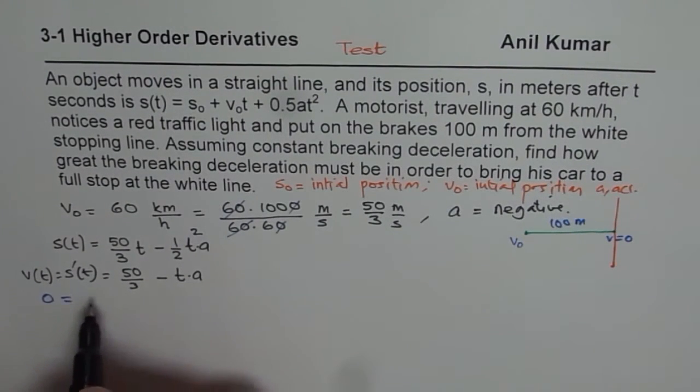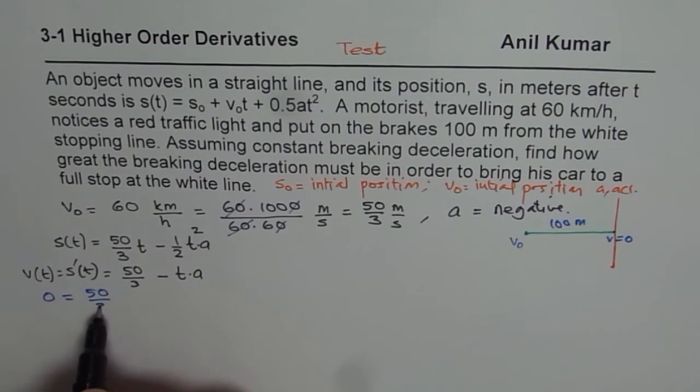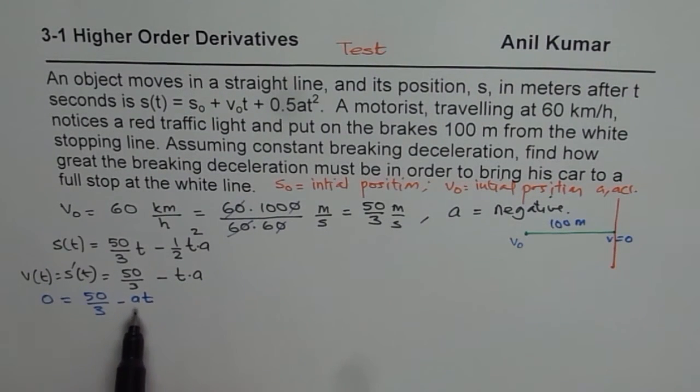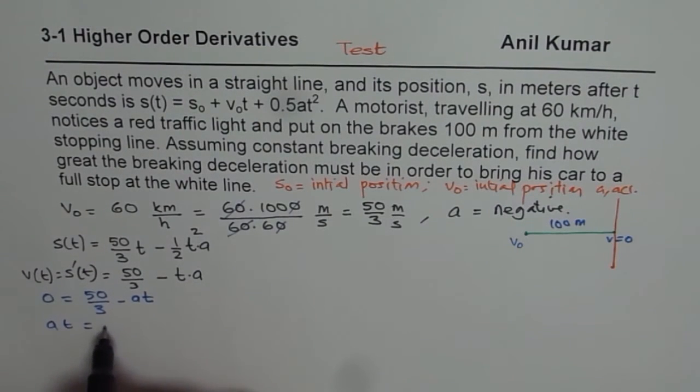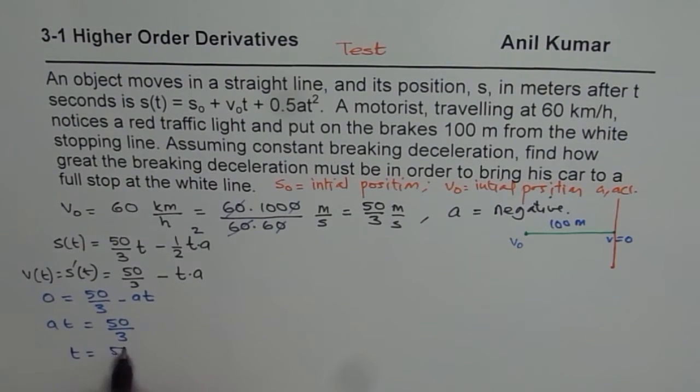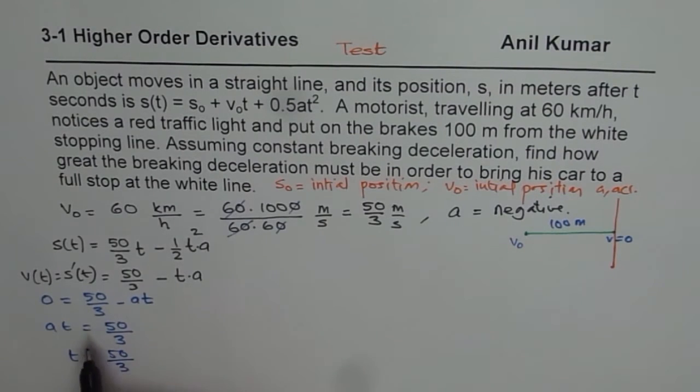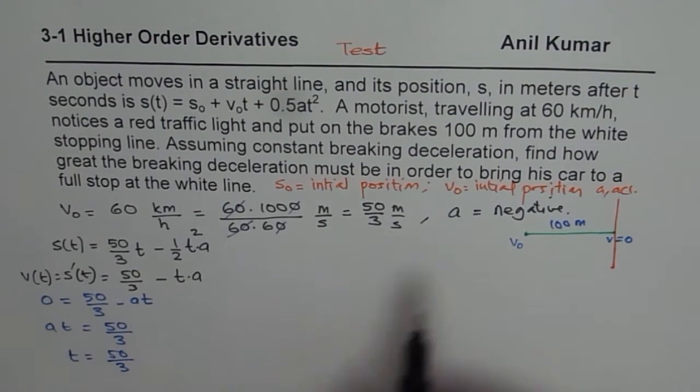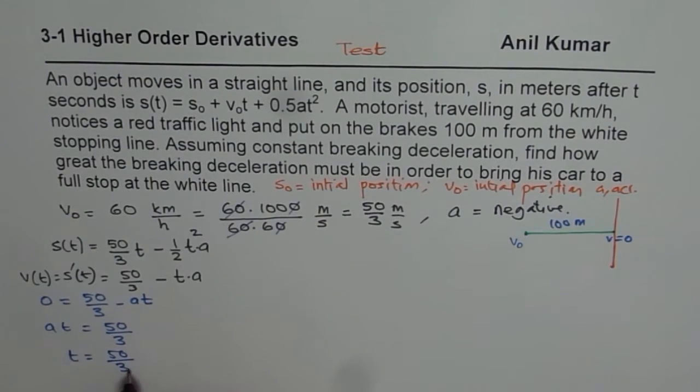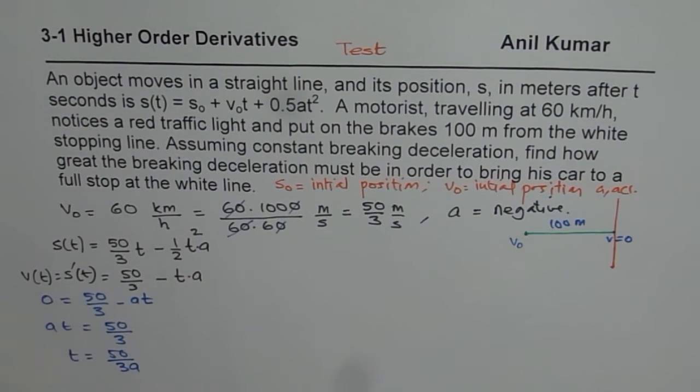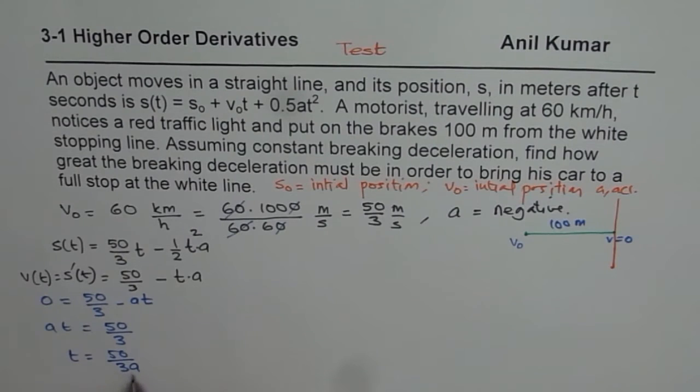So we will substitute 0 here, equals 50 over 3 minus at. And from here, we can solve for t. So at equals 50 over 3, or we say time is 50 over 3. So the time taken by the vehicle to reach from here to here is 50 over 3 times, divided by a. Is 50 over 3a, depending on what is the acceleration.